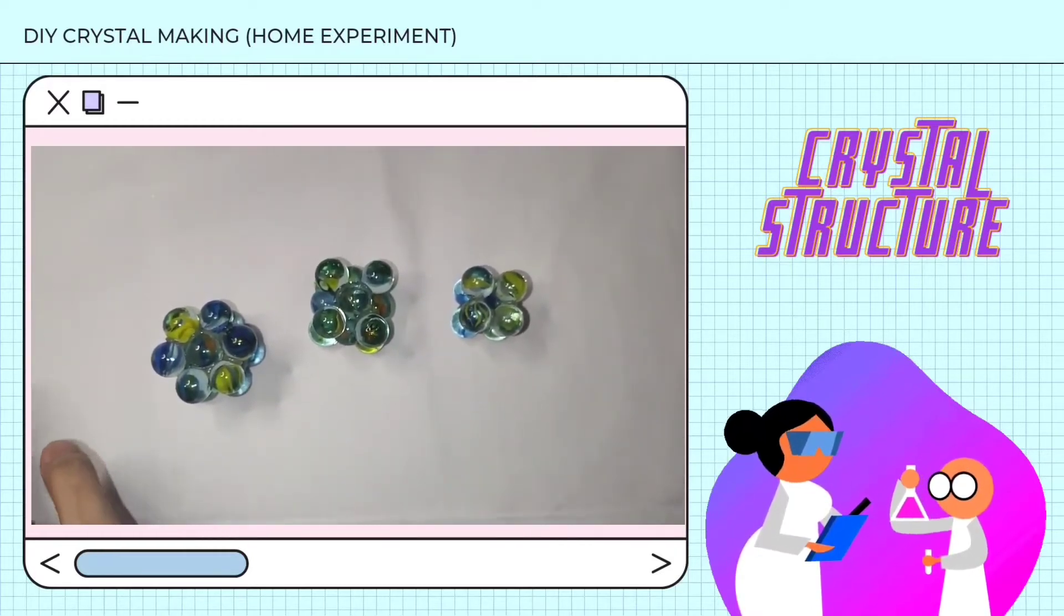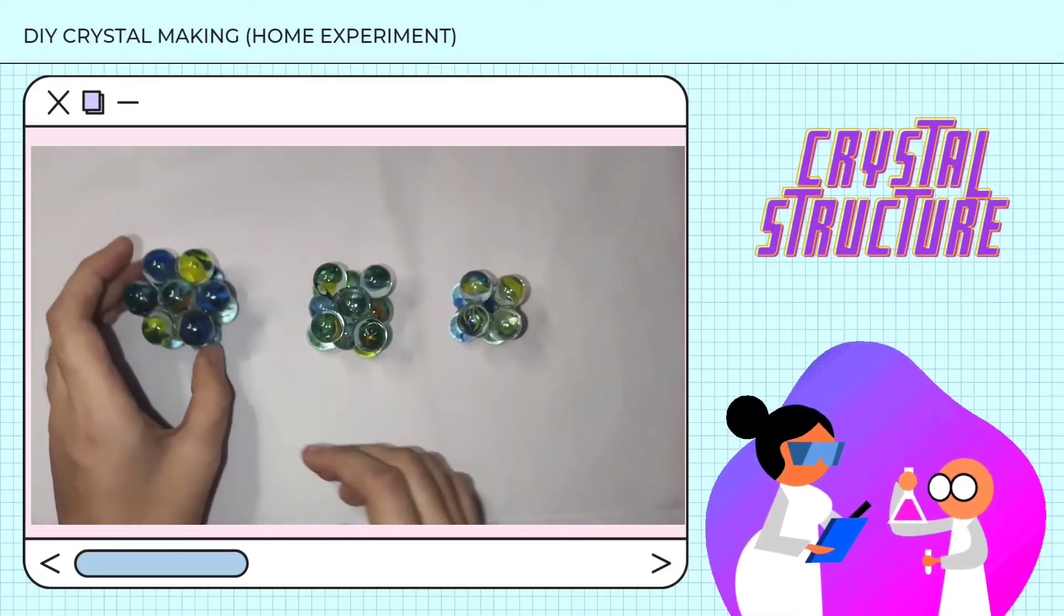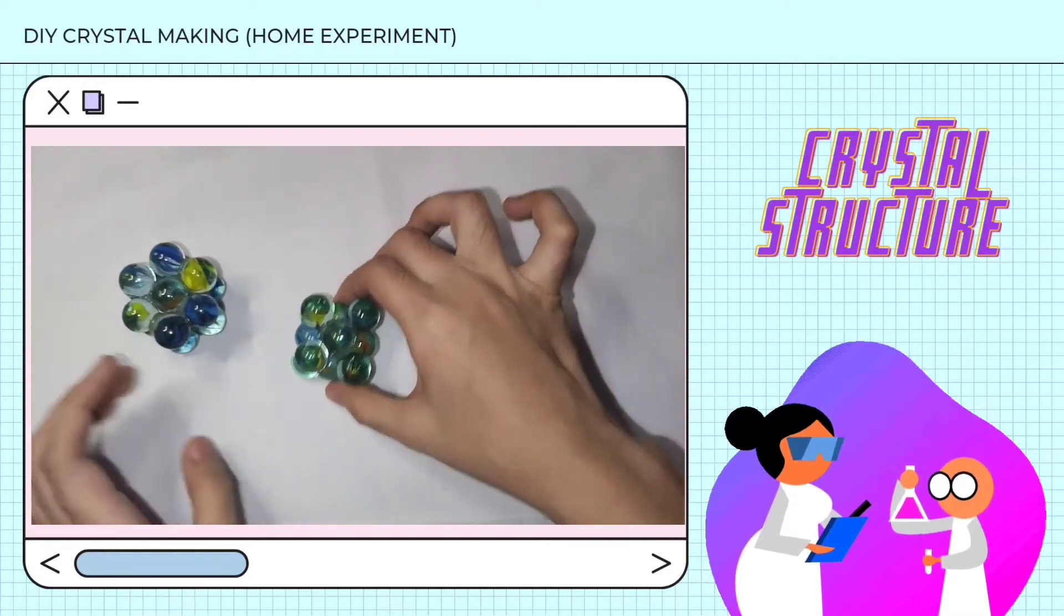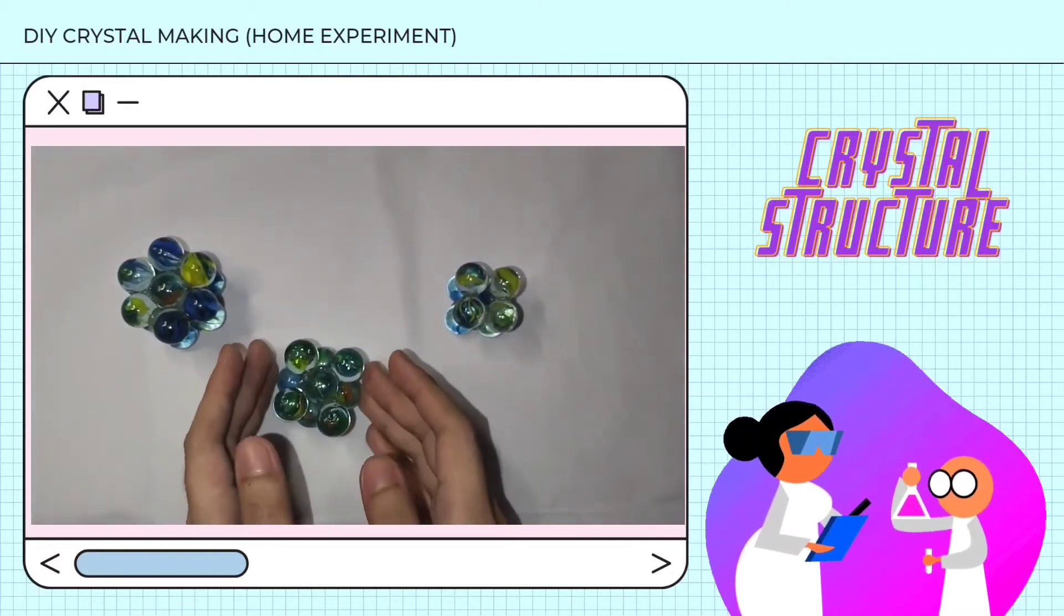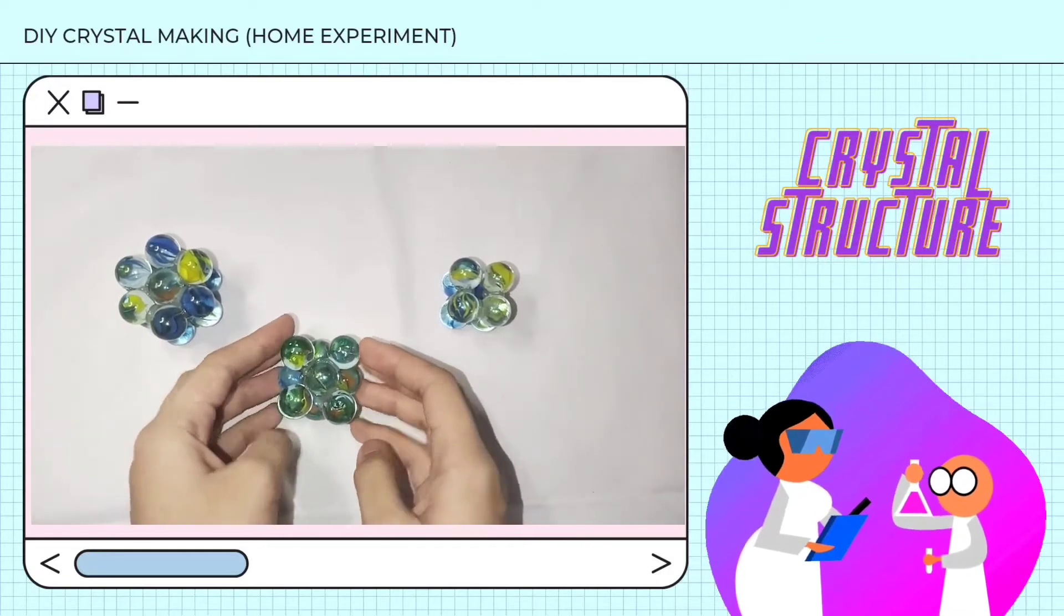And HCP has a coordination number of 12 and contains 6 atoms per unit cell. For the second model, copper, gold, and lead possess this kind of crystal structure, which is the FCC, a type of cubic cell.